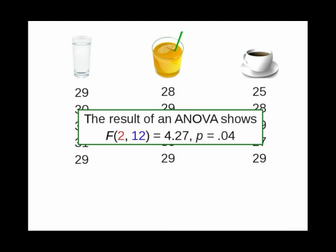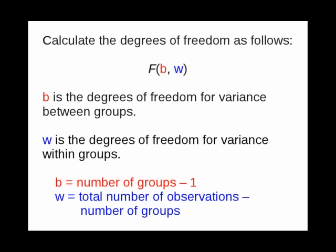What's that 2, 12 doing there? Those are the degrees of freedom for variance between groups and variance within groups. And here's how you calculate the degrees of freedom when you report results for analysis of variance.